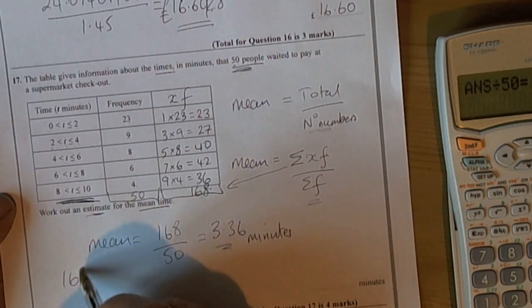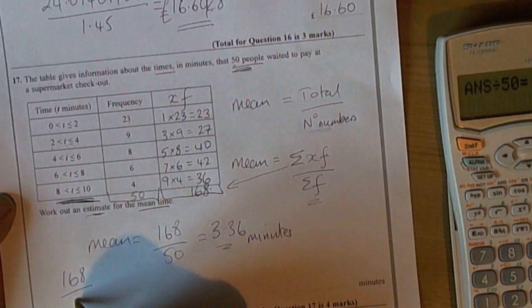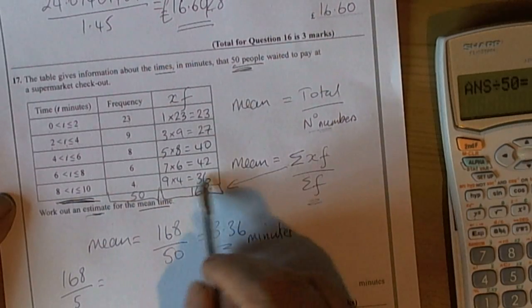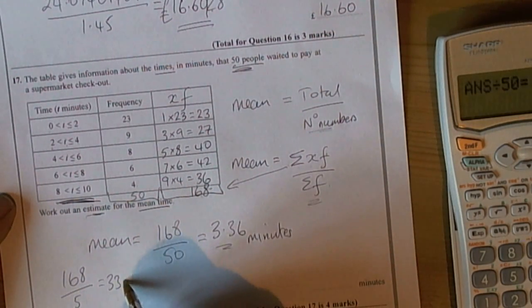So 3.36 fits within there. A common mistake on this question is students do 168 divided by the 5 rows of data. Some students work out the total but then divide by 5, which would give you 33.6 minutes.